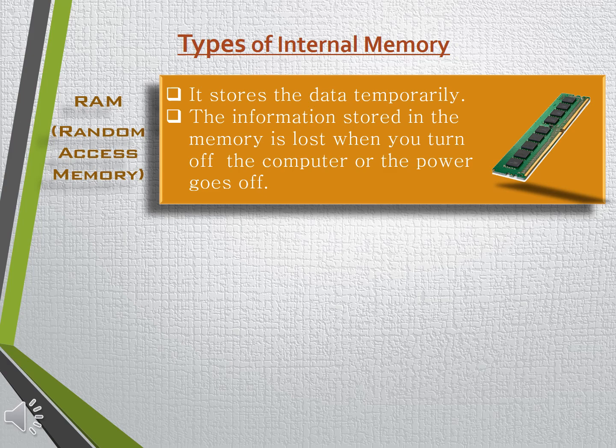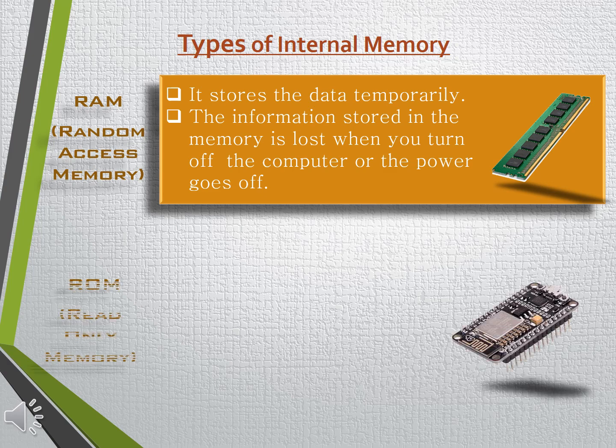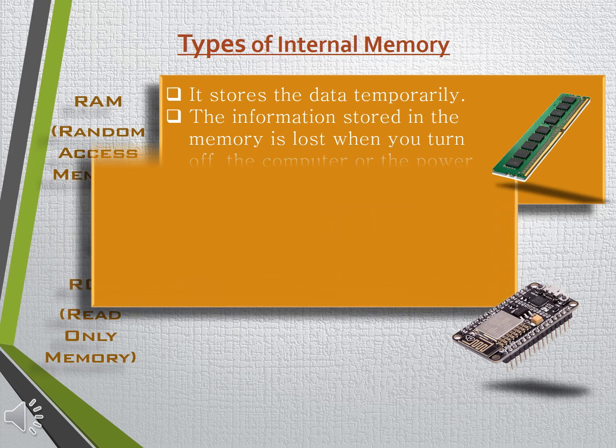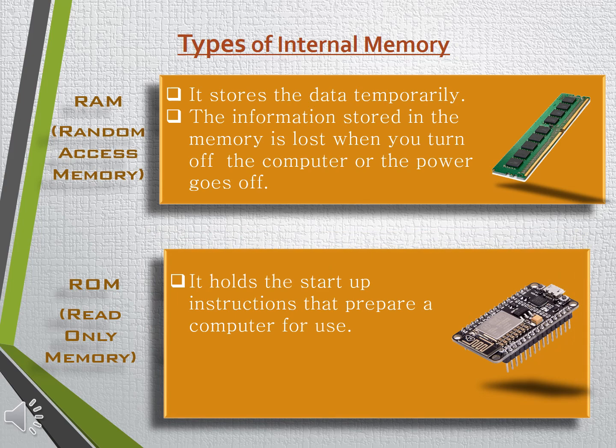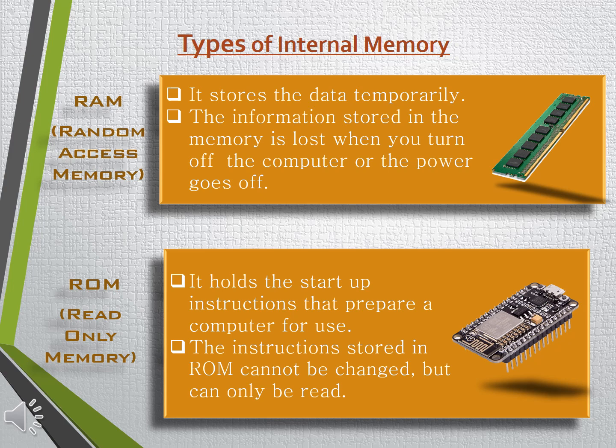The second type of internal memory is ROM, which stands for Read-Only Memory. It holds the startup instructions that prepare a computer for use — it consists of programs that check the proper working of all computer parts when you turn on a computer. Therefore, the instructions stored in ROM cannot be changed, but can only be read. ROM is like an audio disk that can be played but we cannot record anything on it, except in a few selected circumstances.